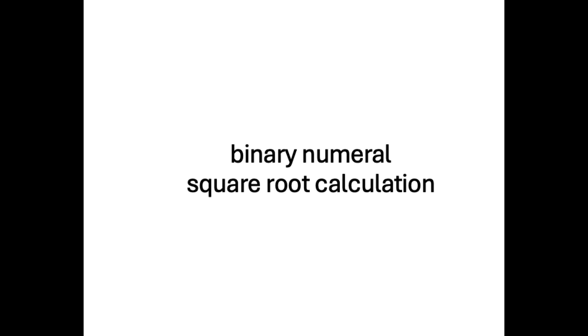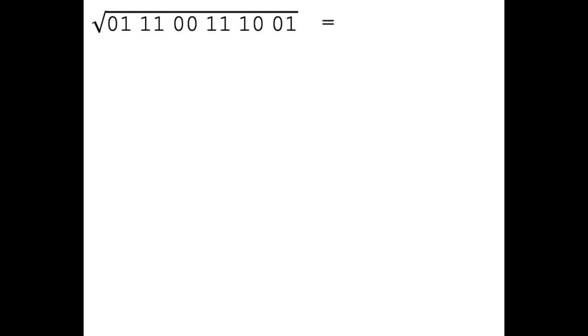In this video, we are going to see how to calculate the square root of a binary numeral. Before we begin, we need to divide the digits of our numeral into pairs, starting from the right. If our numeral has an odd number of digits, we pad a zero digit on the left.